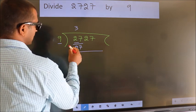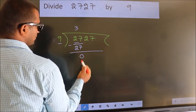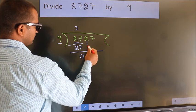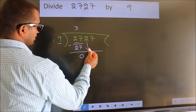Now we should subtract. We get 0. After this, bring down the beside number. So, 2 down.